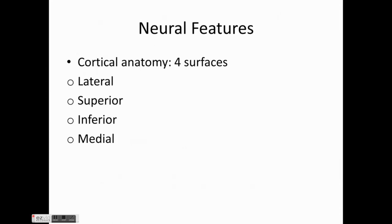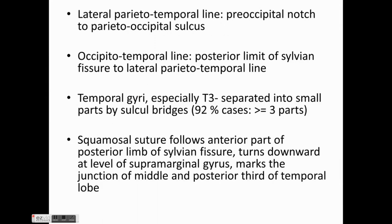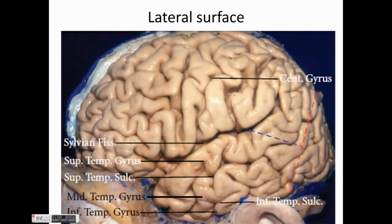Coming to the cortical anatomy of the temporal lobe, we'll be dealing with the four surfaces: the lateral, superior, inferior, and medial surface of the temporal lobe, out of which the most important would be the medial temporal lobe. Coming to the lateral aspect of the temporal lobe, we have the lateral parietotemporal line, which is from the pre-occipital notch to the parieto-occipital sulcus. Then we have the occipital temporal line, which is from the posterior limit of the sylvian fissure to the lateral parietotemporal line. This is how we differentiate the temporal lobe from the parietal lobe and the occipital lobe, as there is no anatomical demarcation.